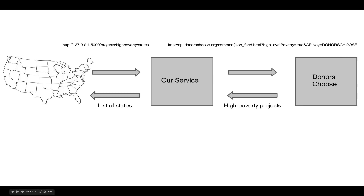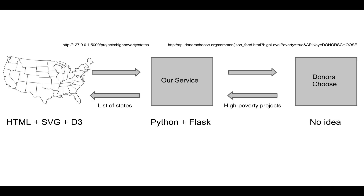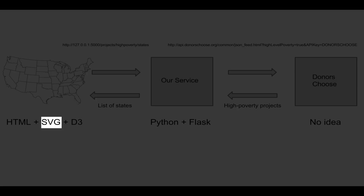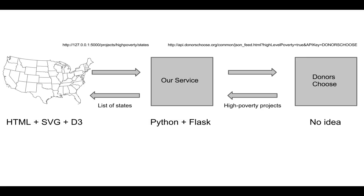The map will call our service with a URL like we always do in REST. Then our service will call DonorsChoose, which will respond with all the high-poverty projects in JSON. Our service will filter out just the state data and return the states in JSON to the map, which will use that list to color those states blue. There are a lot of technologies we can use. For the map, we will use HTML, SVG, and a JavaScript visualization library called D3. For our REST service, we will use the programming language Python and a REST library called Flask. As for DonorsChoose, using JSON and REST means we don't have to know or care what they use. I know this sounds like a lot, but you'll be amazed at how little code it will take to do this. Focus on the big picture and worry about the rest later.